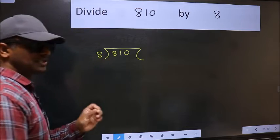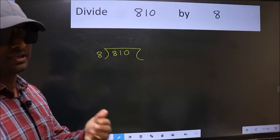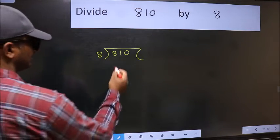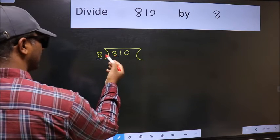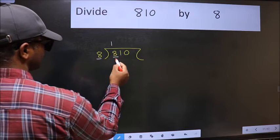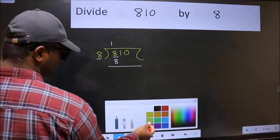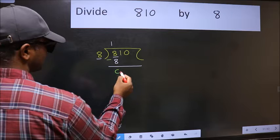This is your step 1. Next, here we have 8 and 8 here. When do we get 8 in the 8 table? 8 once 8. Now we should subtract. We get 0.